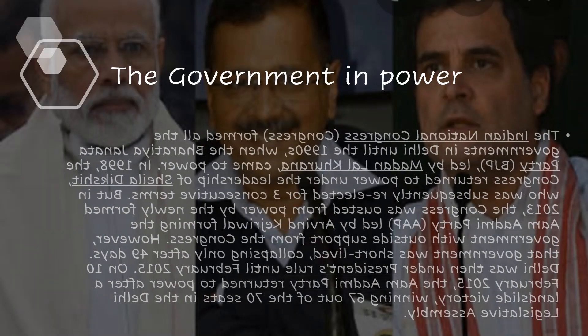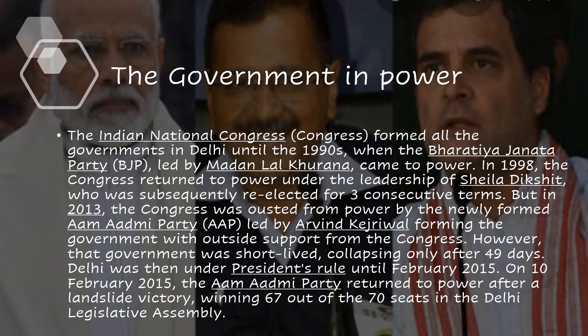The Indian National Congress formed all the governments in Delhi until the 1990s. But the Bharatiya Janata Party (BJP), led by Madanlal Khurana, came to power in 1998. The Congress returned to power under Sheila Dikshit, who was re-elected for three consecutive terms. But in 2013, the Congress was ousted by the newly formed Aam Aadmi Party (AAP), led by Arvind Kejriwal, forming the government with outside support from Congress. However, that government was short-lived, collapsing after only 49 days. Delhi was then under President's rule until February 2015, when the Aam Aadmi Party returned to power after a landslide victory, winning 67 out of the 70 seats in Delhi's legislative assembly.